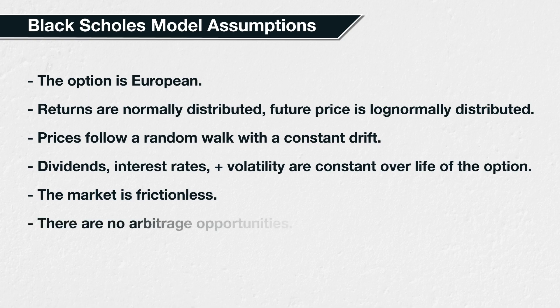There are no arbitrage opportunities. Arbitrage is a process of placing usually two, but sometimes more trades simultaneously, such that a profit is guaranteed. A simple example would be purchasing bitcoin for $40,000 on one exchange, while simultaneously selling bitcoin on another exchange for $40,200, pocketing the difference with no risk. We're not going to spend too much time exploring exactly why each of these may not be a perfect assumption, or what effect it may have on prices. However, it's useful to remember that as with most models, the Black-Scholes model does not perfectly model the system it is attempting to describe. It just provides a very useful framework with which we can work.